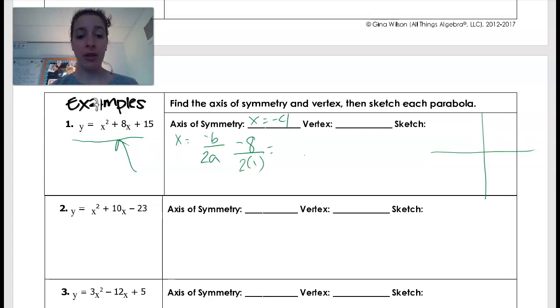So here I would have, and we're always going to use our parentheses, negative 4 squared plus 8 times a negative 4 minus 15. So when I do that, I've got 16 minus 32 minus 15, which gives me a y equals a negative 1. Okay, so now that I have that negative 1, I can plot this point. So my vertex is that x value of the axis of symmetry and then the y value that I just found.